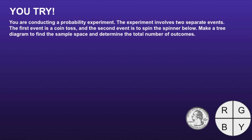Now it's time for you to try. You are conducting a probability experiment involving two separate events. The first event is a coin toss, and the second event is to spin the spinner below. Notice on that spinner, we have four possible outcomes: R, G, B, and Y. Make a tree diagram to find the sample space and determine the total number of outcomes. I would recommend you pause the video now, make your tree diagram, determine the total number of outcomes, and then resume when you're ready to see if you are correct.